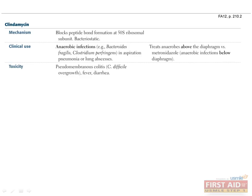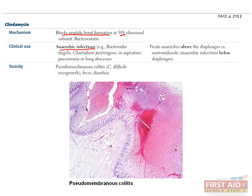Clindamycin is bacteriostatic by blocking peptide bond formation at the 50S ribosomal subunit. It is effective against anaerobic infections, such as Bacteroides fragilis and Clostridium perfringens. One of the most important implications of clindamycin use in the clinical setting is the increased incidence of pseudomembranous colitis as a result of C. difficile overgrowth.